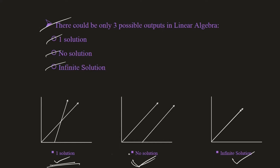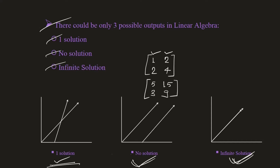For the no-solution case, consider a matrix formed by two vectors where the vectors are dependent on each other — for example, the second column is a multiple of the first column by two. These two lines will never cross each other. Similarly, for infinite solutions, you can have two vectors that are absolutely identical forming the matrix. These are both examples of a singular matrix.